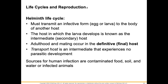The helminth life cycle must transmit in an infective form — either the egg or the larva — to the body of another host. The host in which the larva develops is known as the intermediate host, and the adult and mating occur in the definitive or final host. There is also a transport host, which is an intermediate that experiences no parasitic development. Sources for human infection are contaminated food, soil, and water, or infected animals.